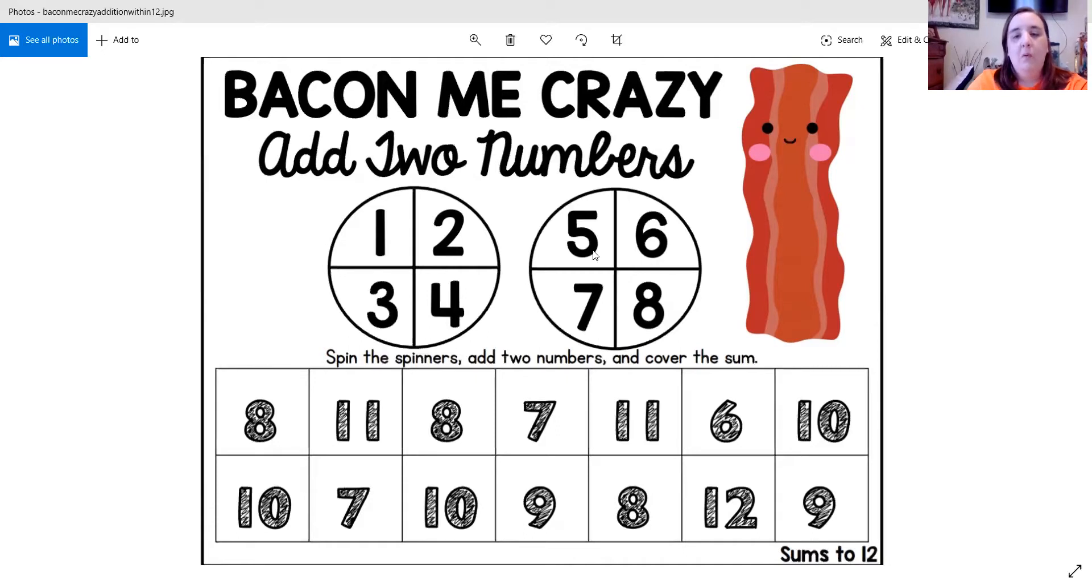And then I would come over here on my second spinner, put that pencil and paper clip on, give it a spin, and get my second addend. Let's say my second number ended up being 7.